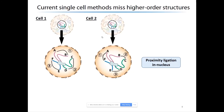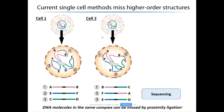We can use bulk methods to generate DNA contacts, and when we work with multiple cells, eventually we'll capture all of these DNA contacts. But when we're working with a single cell, we only have a single copy of the genome to work with, and every contact that we capture will count.